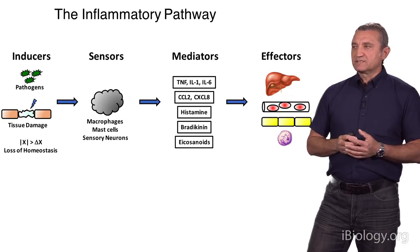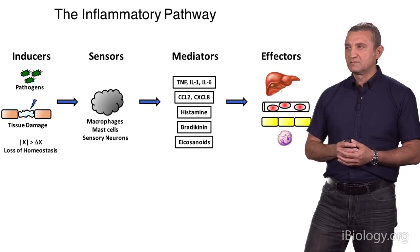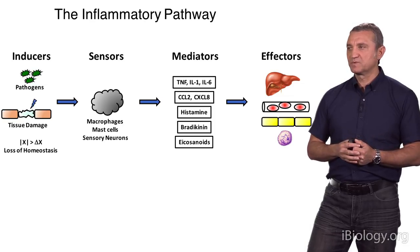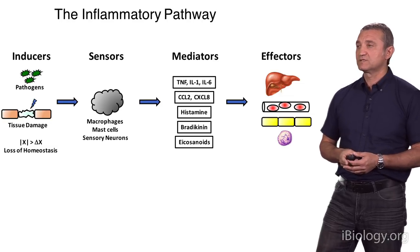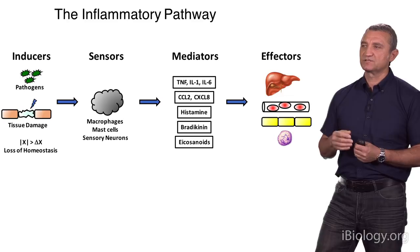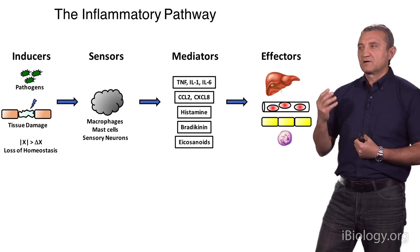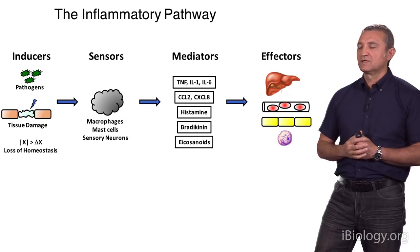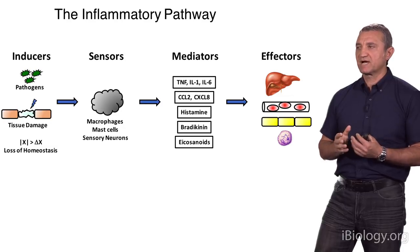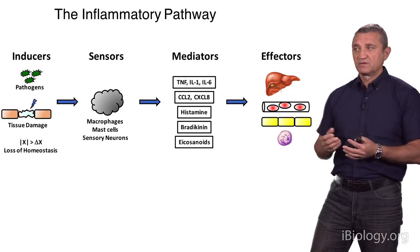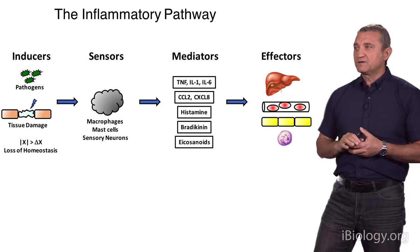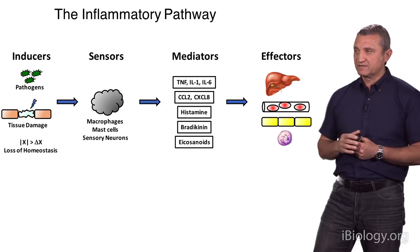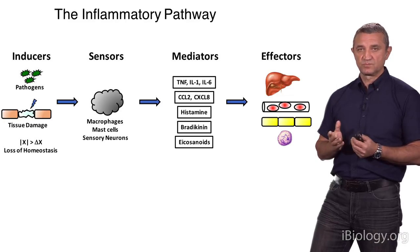We can now summarize much of the diversity of inflammation into simple universal components of the inflammatory pathway. Any type of inflammation includes four universal components. There is always an inducer of inflammation — for example, pathogen, toxin, tissue damage, or loss of homeostasis. There are sensors that detect the inducers, including various types of innate immune cells such as macrophages and mast cells, but also various types of sensory neurons.